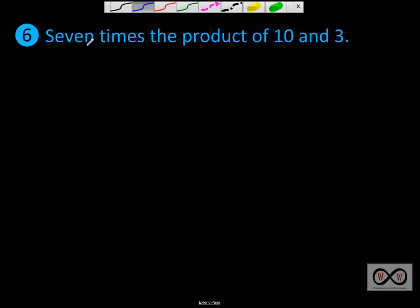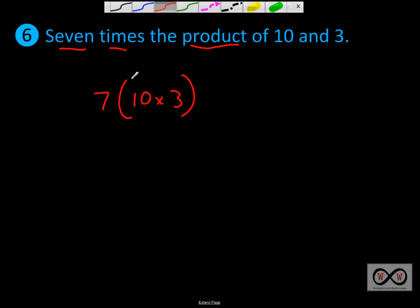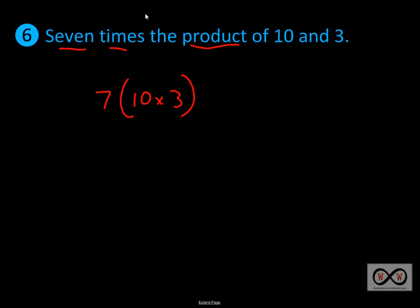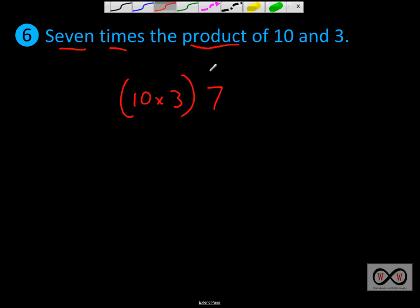Number 6: 7 times the product of 10 and 3. We have 7 times the product — 'product' signals multiplication. So the expression is 7 × (10 × 3). You could also switch it around and put the 7 on the other side: (10 × 3) × 7, and that would give you the same result, because order of operations tells us to handle what's in parentheses first, then multiply by 7.